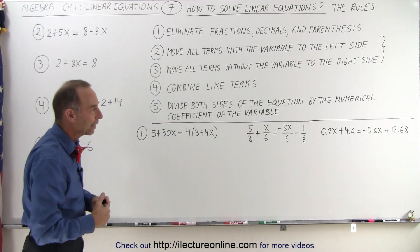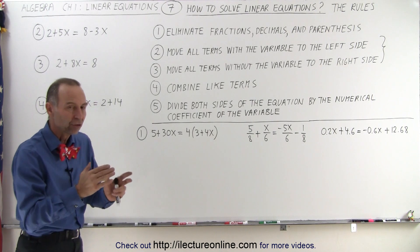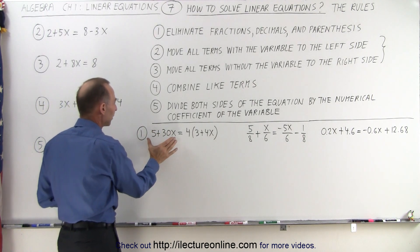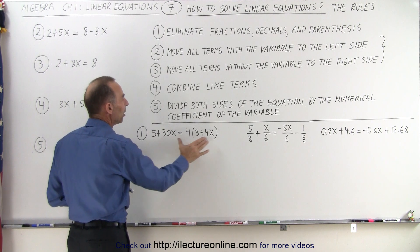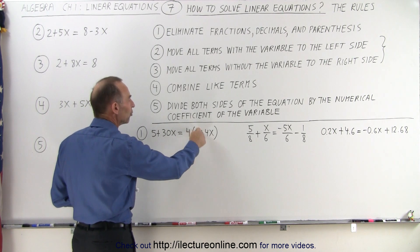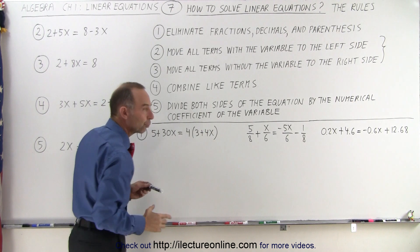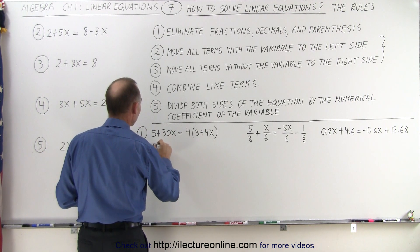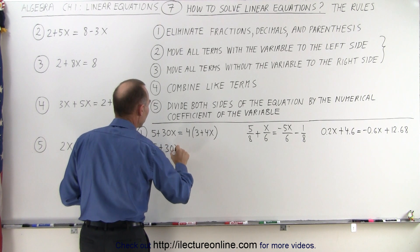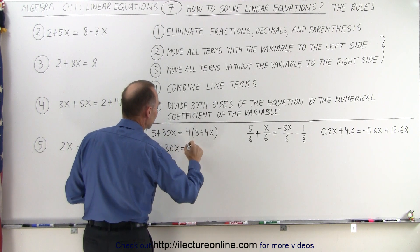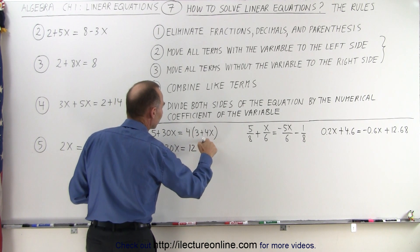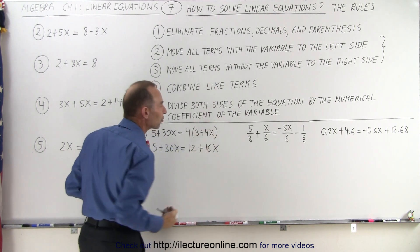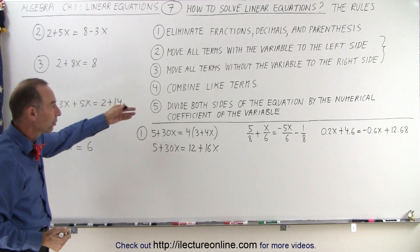We'll get into more detail in the next videos, but let's show the general approach. Here we don't have any parentheses on the left side, but we do on the right side. So we're going to distribute the 4 over the two terms inside the parentheses, which means this becomes 5 plus 30x equals 4 times 3, which is 12, plus 4 times 4x, which is plus 16x. Then we would continue to execute the problem as shown in the rules.